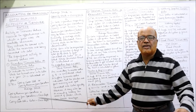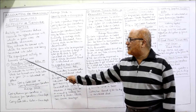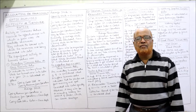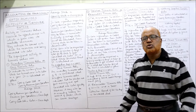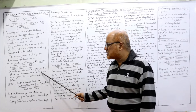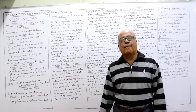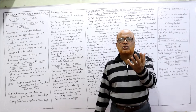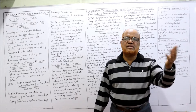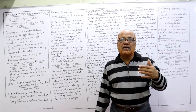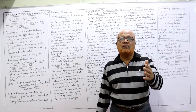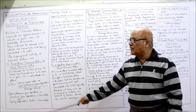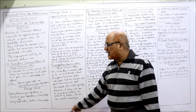The first significant activity ratio is the Inventory Turnover Ratio, also called Stock Turnover Ratio. This is a very important ratio frequently asked in examinations. It indicates the number of times the stock has turned over into sales in a year — that is, how many times we are converting the stock into sales. Stock means goods purchased for the purpose of sale.